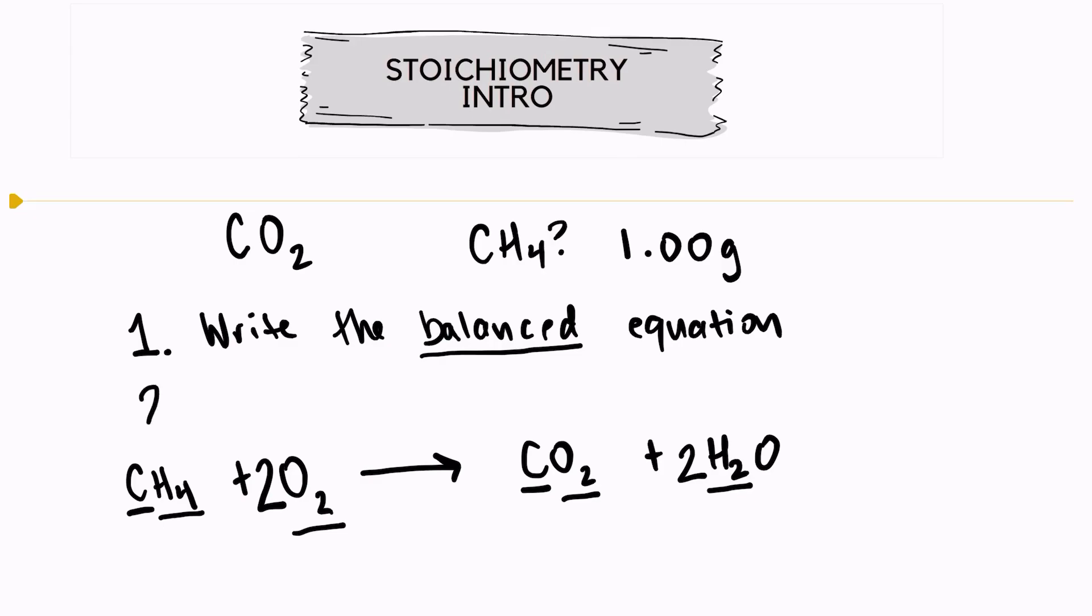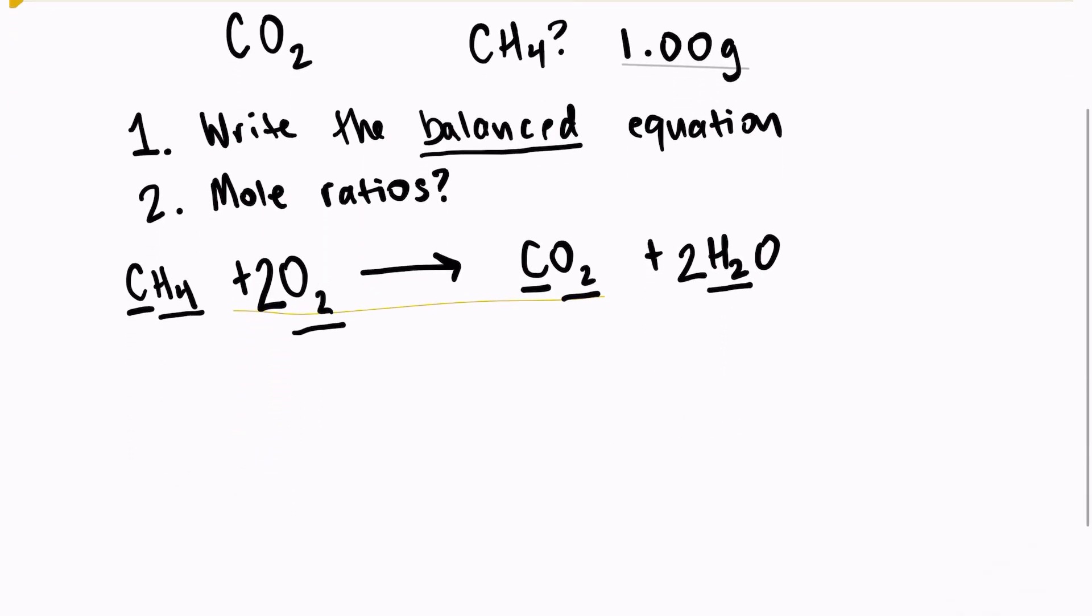And now we can actually use stoichiometry to predict how much carbon dioxide is going to be made. So the second step in solving a stoichiometric problem is find the mole ratios that we need to use.